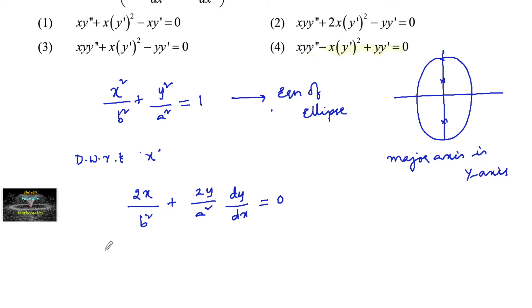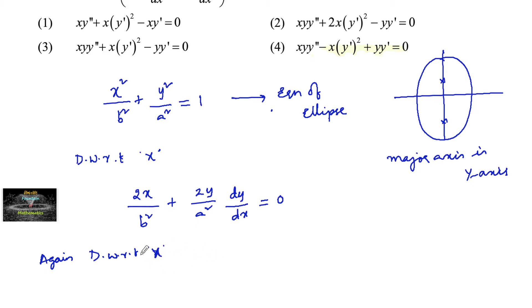Again differentiating — since we have two parameters, a and b, the order of the differential equation must be 2. So we differentiate again with respect to x.